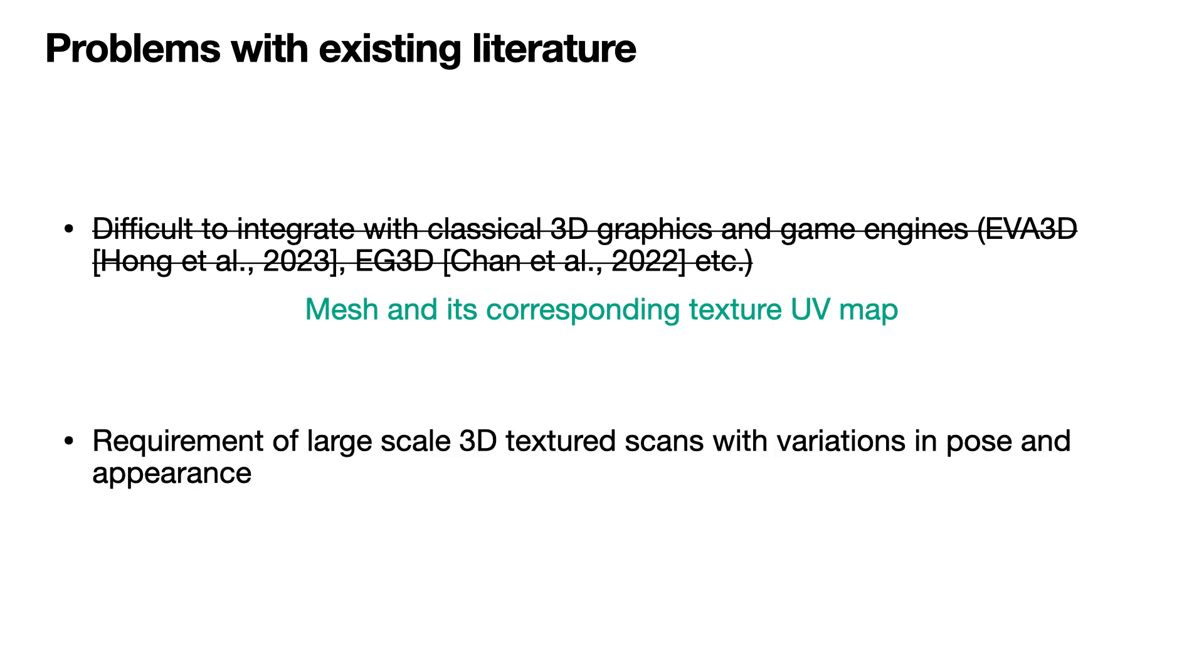But to learn such a distribution requires a large-scale database with textured scans and aligned registrations. This is difficult to get. To this end we propose a novel deep learning framework called SCULPT to learn from unpaired geometry and texture data.